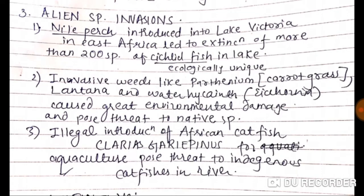The third cause is alien species invasion. The Nile Perch introduced into Lake Victoria in East Africa led to the extinction of more than 200 species of cichlid fish in the lake. Invasive weeds like Parthenium (Carrot Grass), Lantana, and Water Hyacinth caused great environmental damage and posed threats to native species.